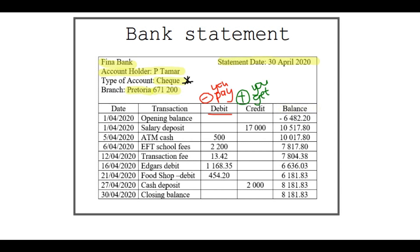On 1 April, there's an opening balance — this is what is left in the account on that date, and it's negative 6,482.